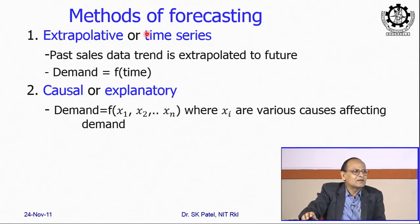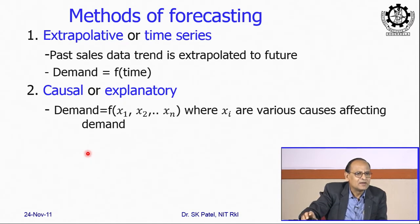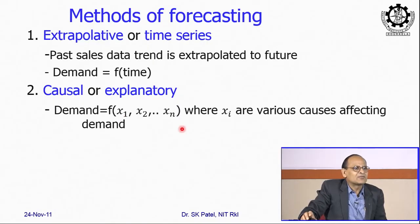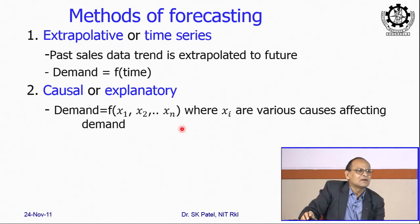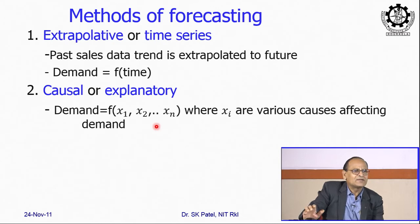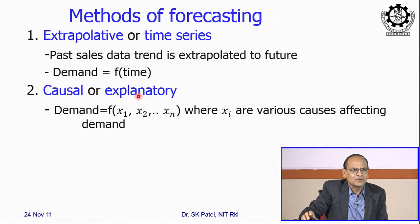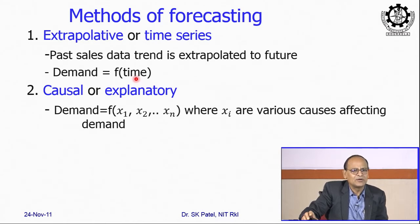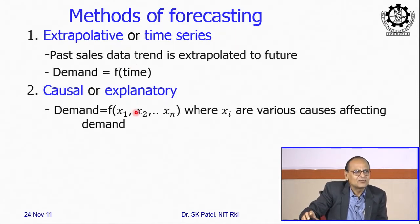The second category: here demand is not a function of only time — it can be a function of various other factors. So it is a function of various causes — this is called causal forecasting or explanatory forecasting. You can explain why demand is at a certain level because of many parameters. In this case it is a multivariable problem, and any variable including time can be an independent variable. In time-series it is only a single variable — and that single variable has to be time. In causal, it is multivariable.